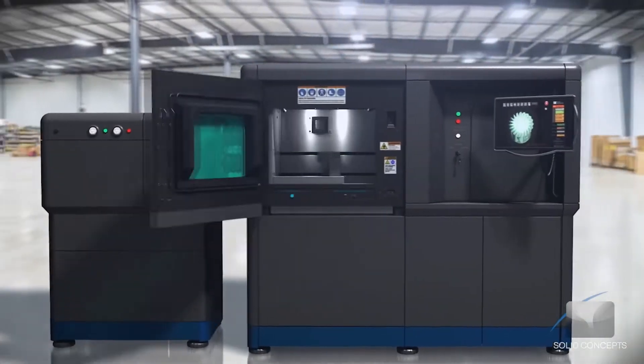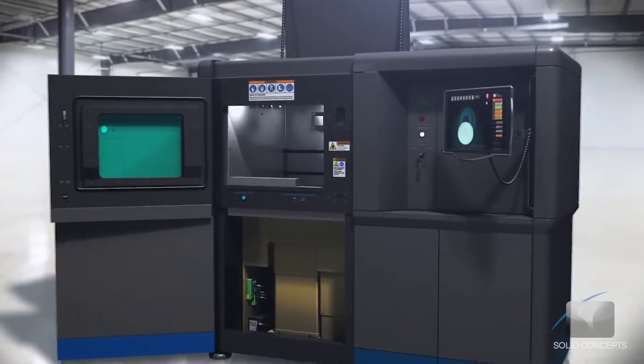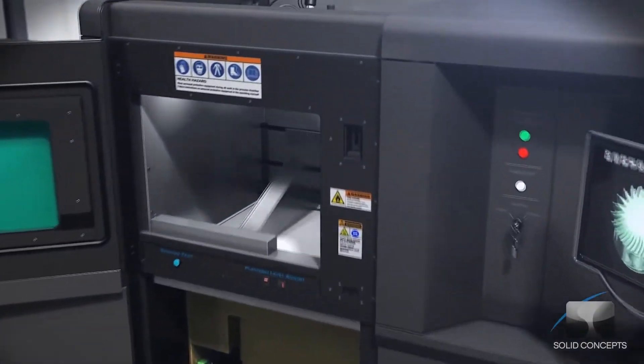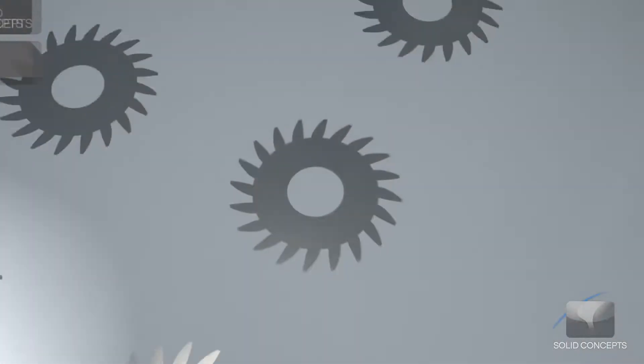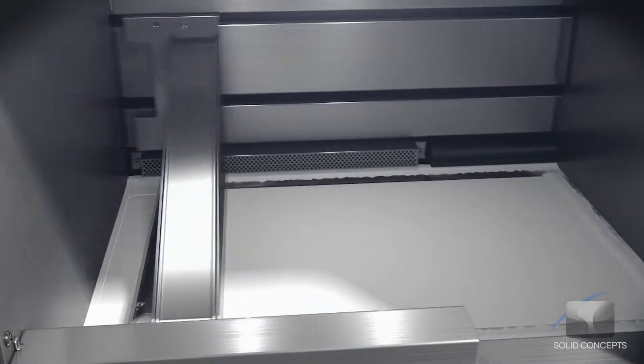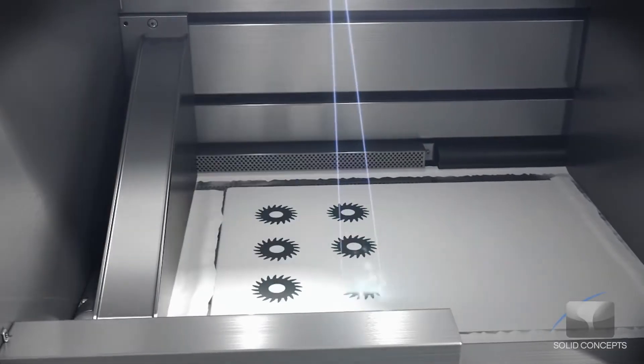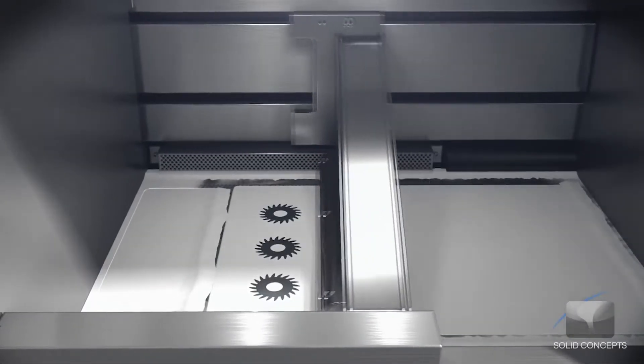The data is then transferred to the DMLS equipment. A recoater assembly pushes powdered metal material from the powder supply to create a uniform layer over the base plate.